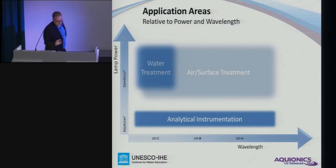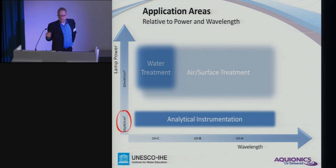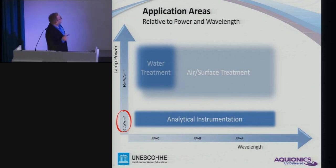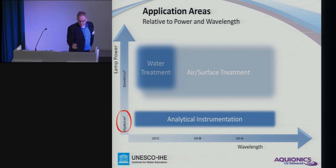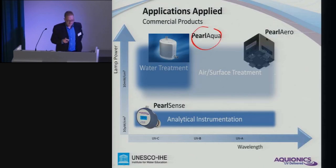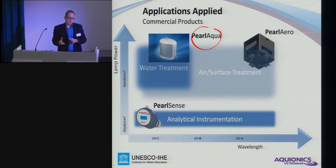Today you probably have to get used to microwatts and milliwatts here first, instead of watts and kilowatts. Depending on the lamp power and the wavelength, we have different areas of application. With low output, we can already allow analytical instrumentation to work. With lamp powers in the 10-plus milliwatts per centimeter squared range, we can do water treatment and air or surface treatment. We have seen the Pearl Aqua before — that's what we have presented as a working water treatment product, more thought of as a product development platform, not a mass product as it is today.